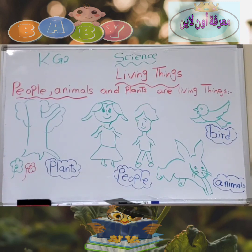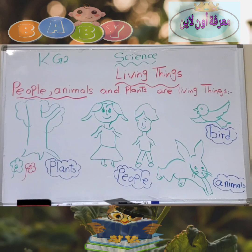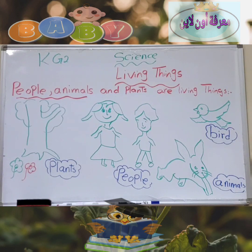So living things are what is around us in the environment. Living things like people, animals, plants, and birds. The next lesson we will study about the needs for living things.